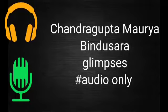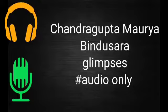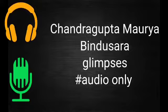Chandragupta, with the help of Kautilya, usurped the throne by defeating Dhanananda in 321 BCE. The important rulers of the Mauryan Empire were: Chandragupta Maurya (322–298 BCE), Bindusara (297–272 BCE), and Ashoka (268–232 BCE).